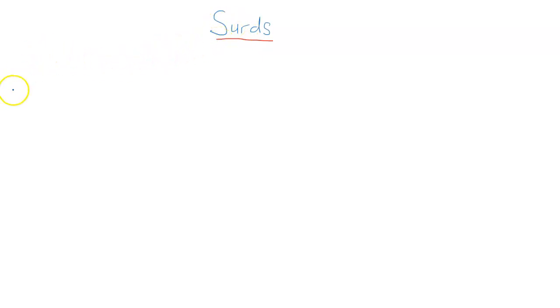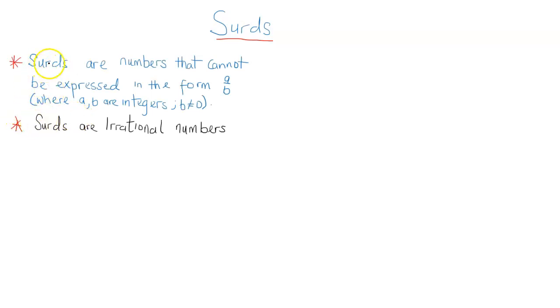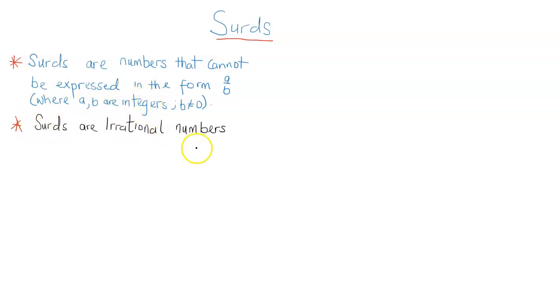In this video we are going to be talking about surds. First, the definition: what are surds? Surds are numbers that cannot be expressed in the form a over b, where a and b are integers and b cannot be zero, because if b is zero that makes the fraction undefined. So surds are numbers that cannot be expressed as a fraction — that's the basic definition. They are numbers that cannot be expressed as fractions where the numerator and denominator are integers. Surds are also irrational numbers.